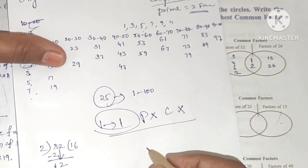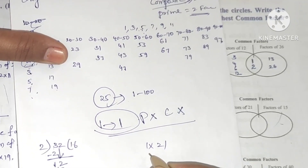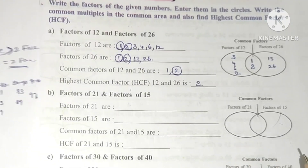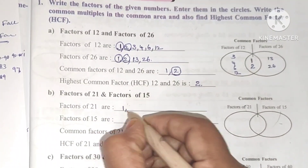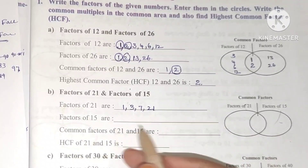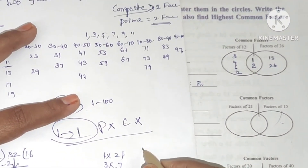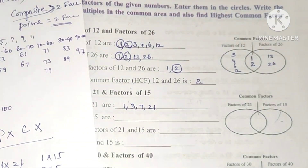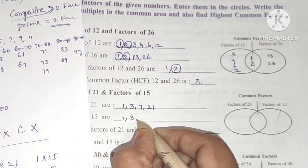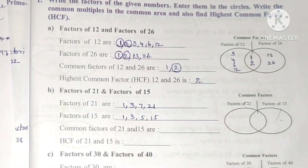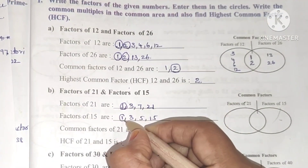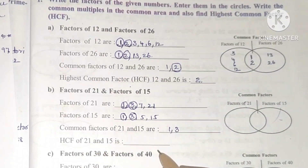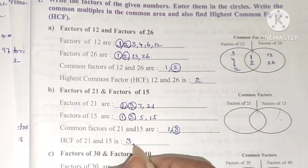Next, factors of 21 and 15. Factors of 21: 1, 3, 7, 21. Factors of 15: 1, 3, 5, 15. Common factors are 1 and 3. The highest common factor is 3, so HCF of 21 and 15 is 3.